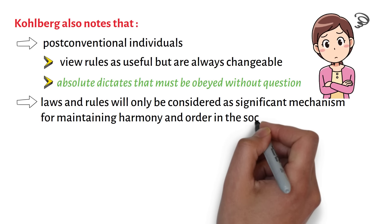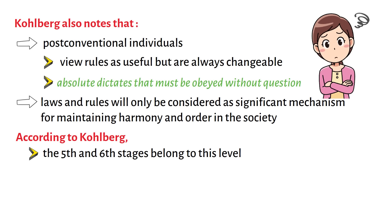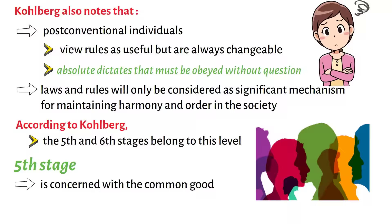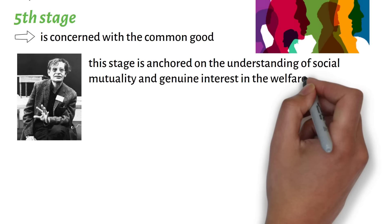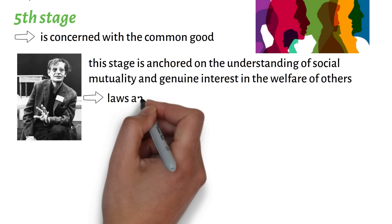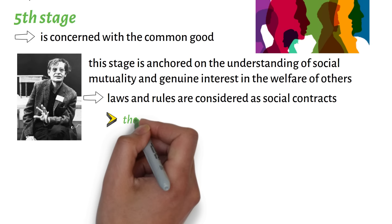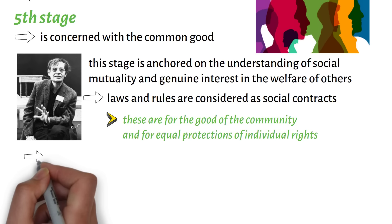According to Kohlberg, the fifth and sixth stages belong to this level. The fifth stage is concerned with the common good, anchored on the understanding of social mutuality and genuine interest in the welfare of others. Here, laws and rules are considered as social contracts that are for the good of the community and for equal protection of individual rights. For this reason, laws can only be accepted or approved relative to the common good of society.